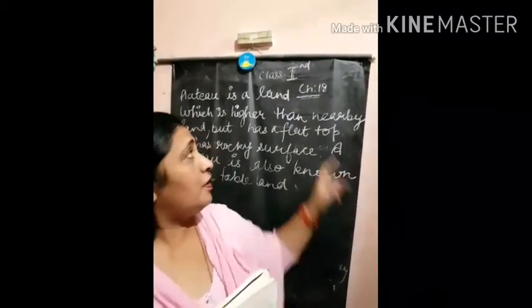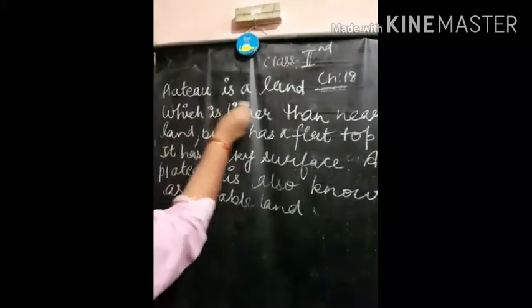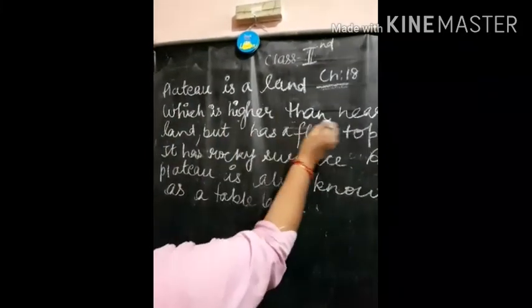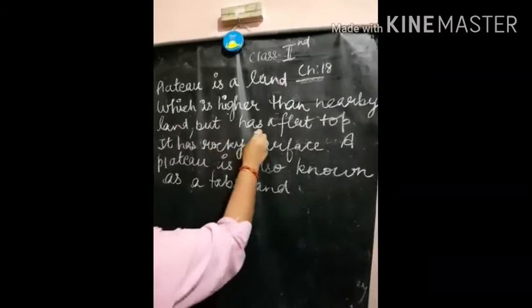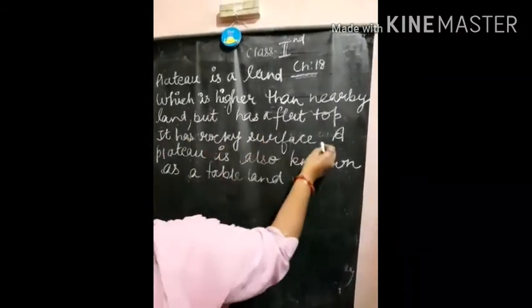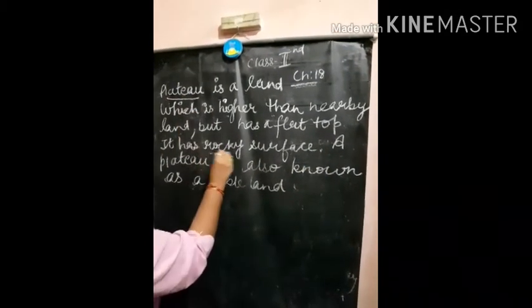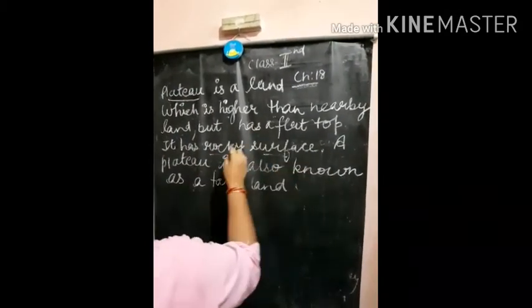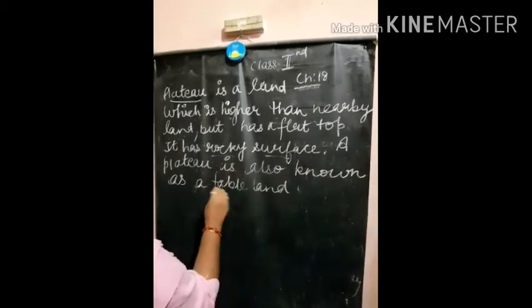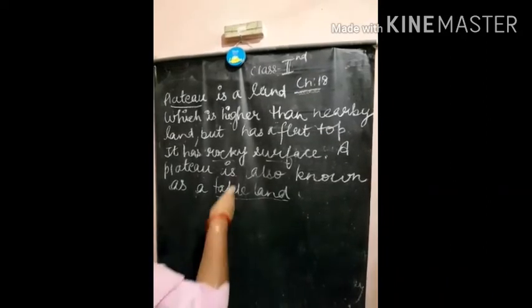This is my 2nd video of chapter 18 and we will start from Plateau. A plateau is a land which is higher than nearby land but it has a flat top. A plateau is also known as a table land.